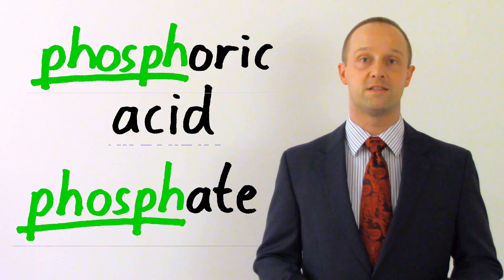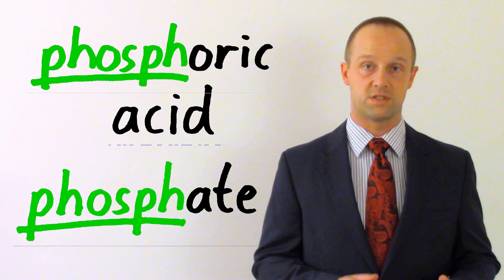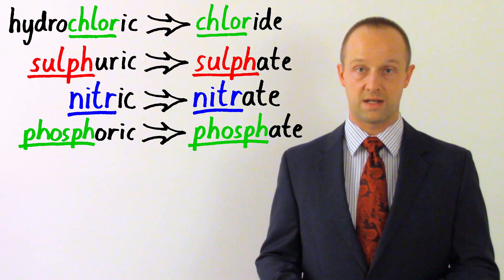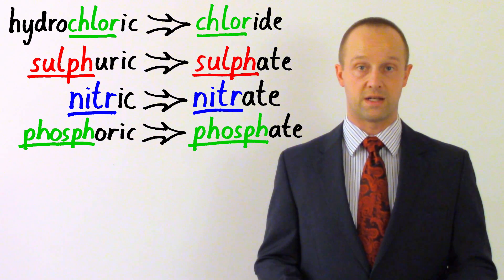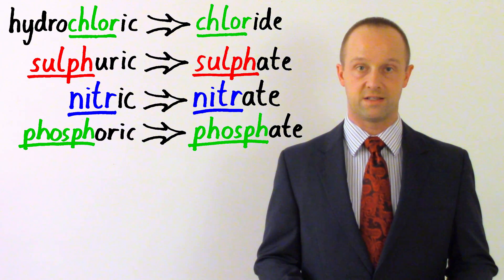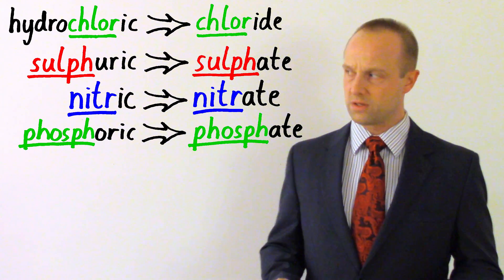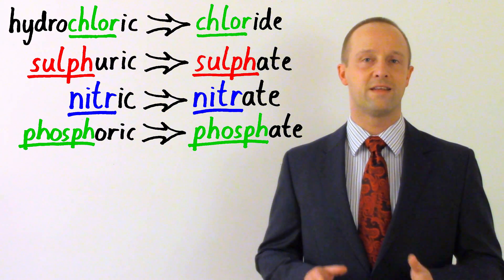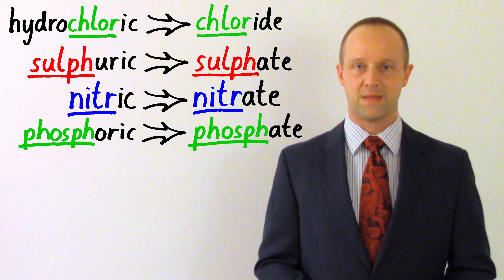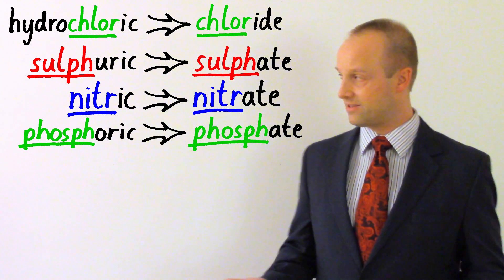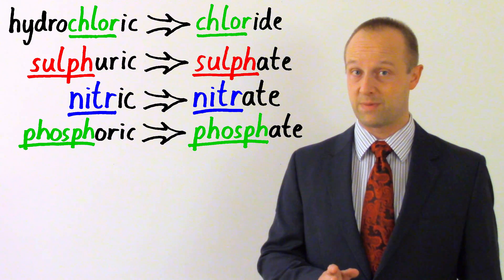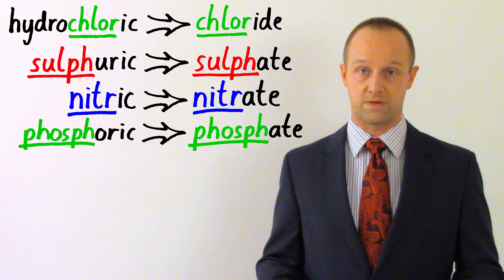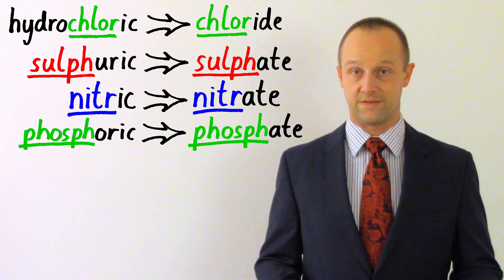Again, the name of the acid tells you the name of the type of salt. So running through those again quickly, hydrochloric acid always forms a chloride. Sulfuric acid always forms a sulfate. Nitric acid always forms a nitrate. And phosphoric acid always forms a phosphate. Once you learn those, and once you learn that the name of the acid tells you what type of salt you're forming, it's pretty easy, right? That's not something which will take you very long to learn. But that's the hard part of this. That's the hard part of figuring out what salt you've got. The next step is even easier than this.